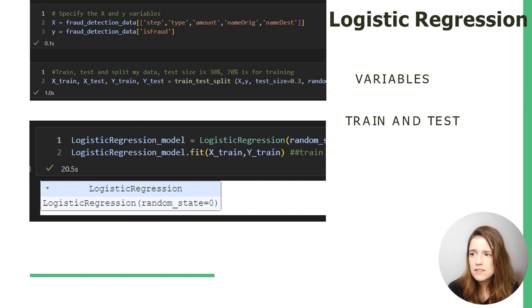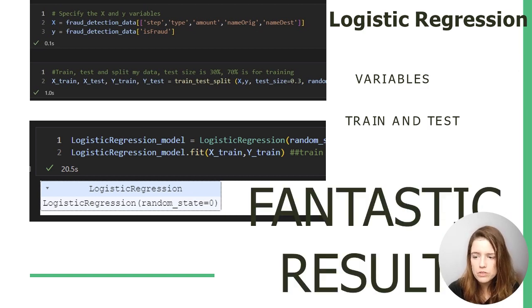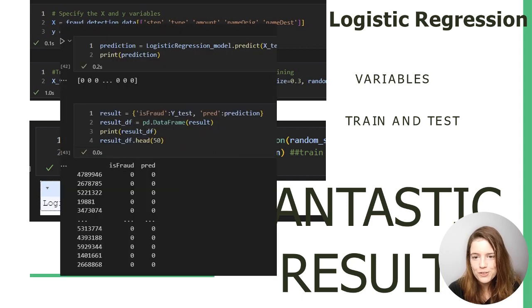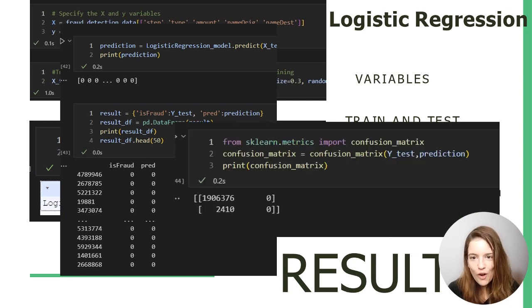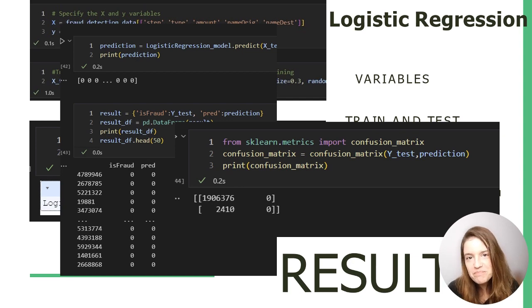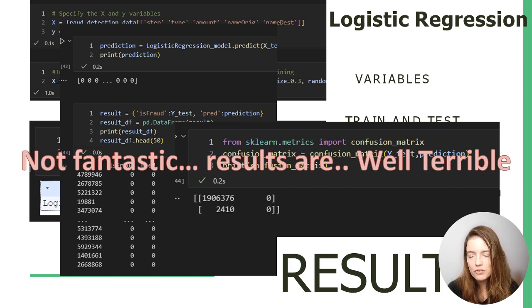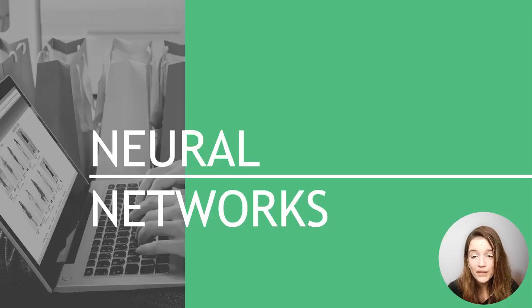Initially I did some logistic regression. These were my variables — I had fantastic results. You'll see nothing predicted: everything was predicted as no fraud. This was the confusion matrix, and as you can see, I'm not predicting anything because nothing is predicted as fraud. Well, not fantastic results — it was actually terrible.